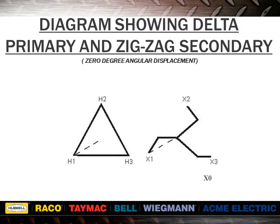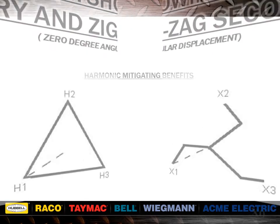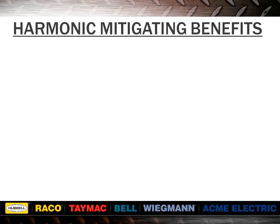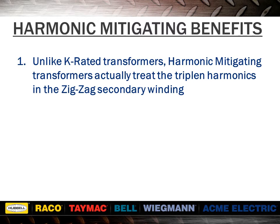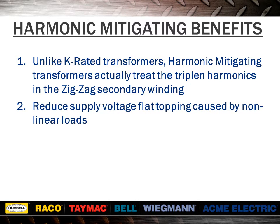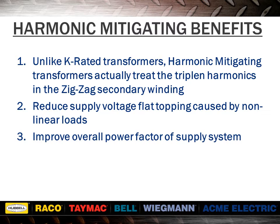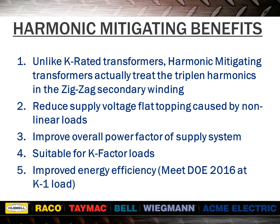Here we see a diagram that shows the delta primary and the zigzag secondary. There are several benefits to harmonic mitigating transformers. Unlike k-rated transformers, harmonic mitigating transformers actually treat the triplin harmonics in the zigzag secondary winding. They reduce supply voltage flat-topping caused by non-linear loads, improve overall power factor of supply systems, are suitable for k-factor loads, and provide improved energy efficiency which meets the DOE 2016 at k-1 load.